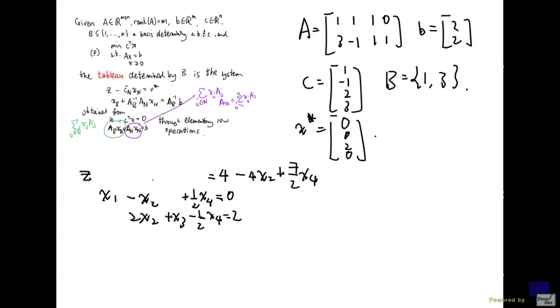Because if I plug in 0, 0, 2, 0 into x_1, x_2, x_3, x_4, I get z equal to 4. So if I have something positive for x_2 but 0 for x_4, then I will have a solution that is better than x star. And the question is, can we find a solution?